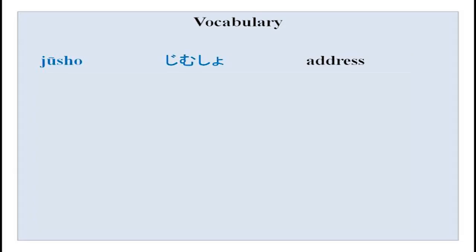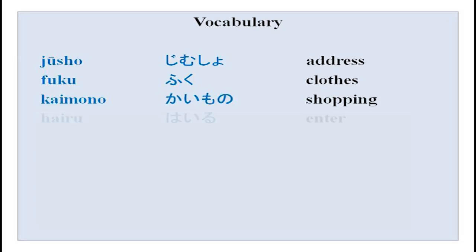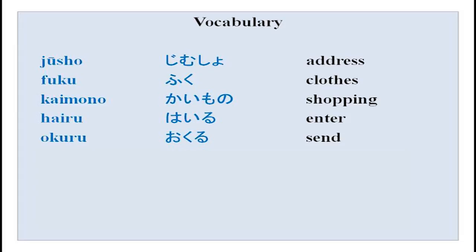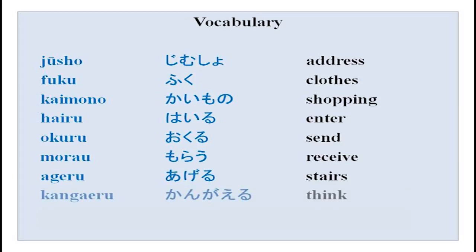Vocabulary from this lesson — repeat after me: juusho — address; fuku — clothing; kaimono — shopping; hairu — to enter; okuru — to send; morau — to receive; ageru — to give; kangaeru — to think; miseru — to show. The meanings and hiragana are given on screen.